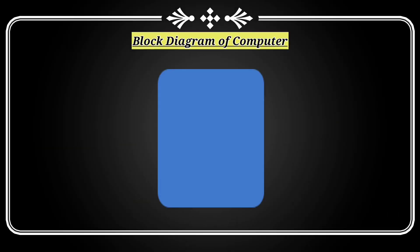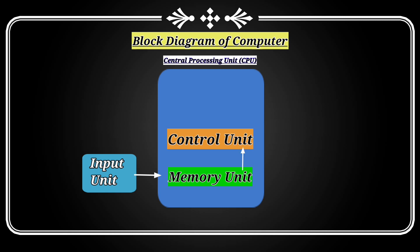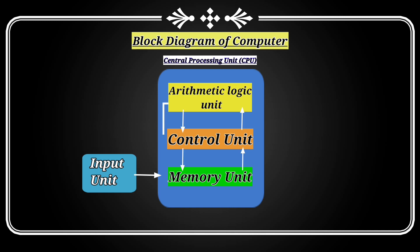The block diagram of a computer works off a central processing unit, also called the brain of the computer. Data from the input unit goes to the memory unit. From there it goes to the control unit and then is passed through the arithmetic logic unit. The exchange of data is directly between the memory unit and arithmetic logic unit. All this data is then passed to the output unit.